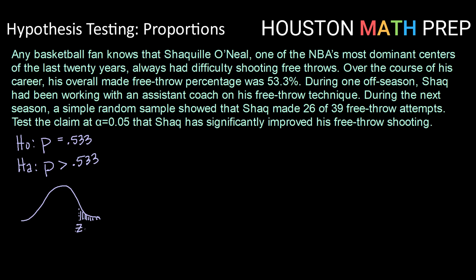We will need to find a Z critical value. With alpha equal to 0.05, we're looking for that critical value. That's one you may just know off the top of your head, but if not, you can use inverse normal with an area below of 1 minus 0.05, or 0.95 — that's going to give us 1.645.